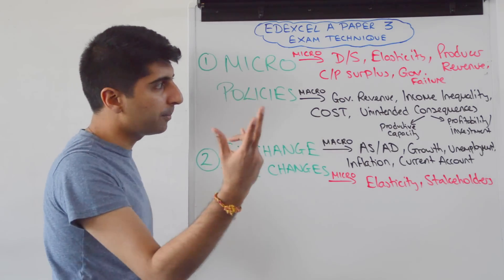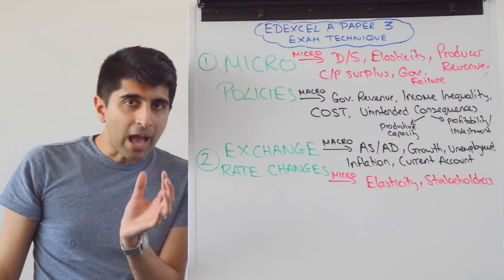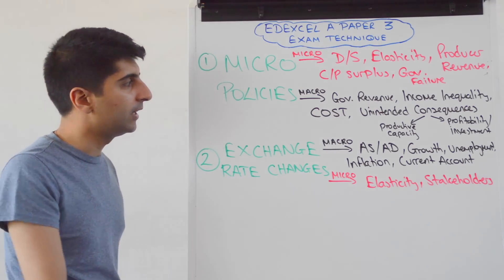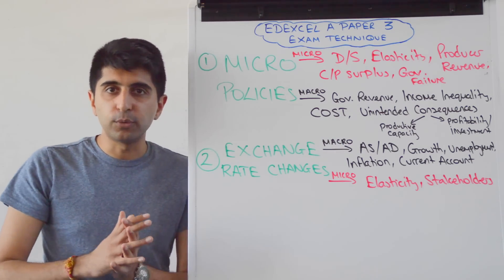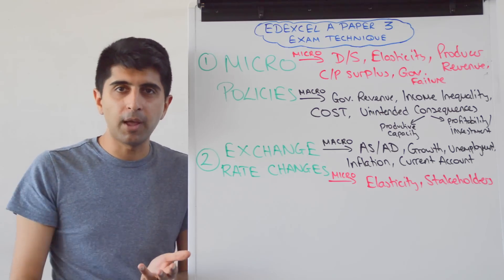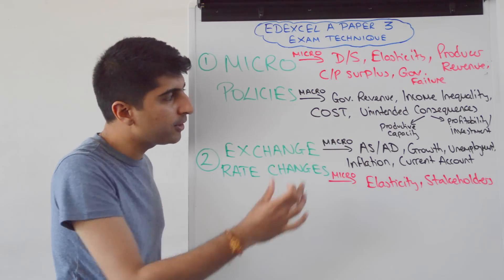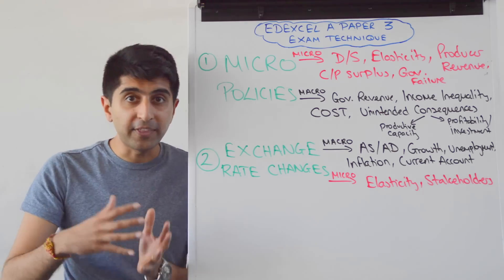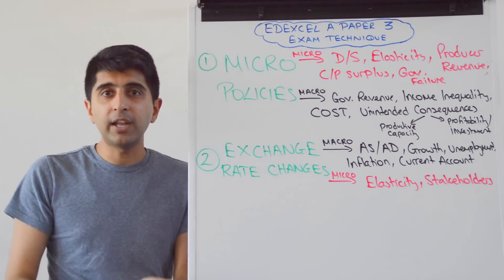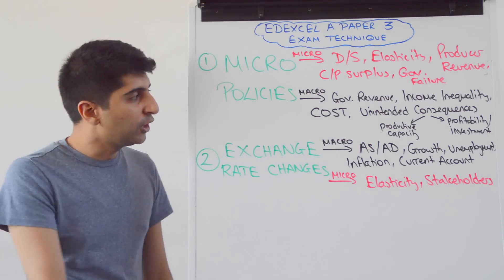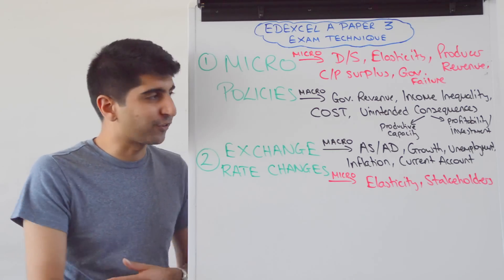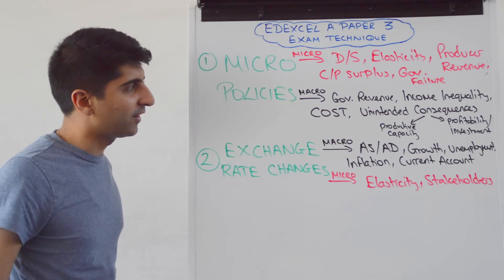Can certain micro-policies actually worsen income inequality and therefore lose a macro-objective? Take an indirect tax or a minimum price — regressive policies here. A lot of these micro-policies will have significant costs attached to them: subsidies, regulation, admin enforcement, tradable permits, et cetera. Any time you can talk about the cost to the government, you can talk about the implications — does this mean potentially austerity going forward if national debts or budget deficits become too high? You can talk about the macro-implications of a micro-policy generating too much cost.